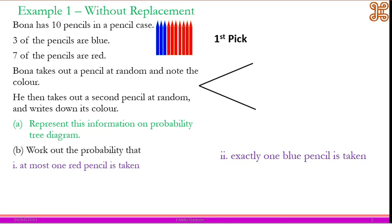We need to understand that there are two events: the first picking and the second picking. During the first picking, to pick a blue is three out of ten, and to pick a red will be seven out of ten. That is easy to understand.